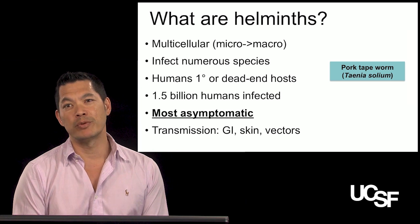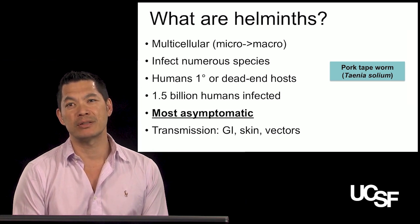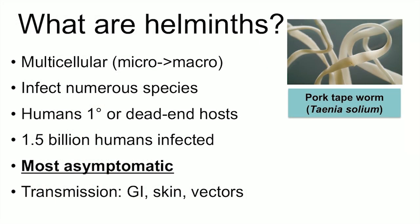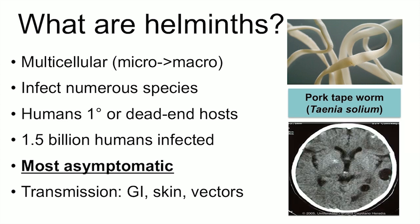Let's give you an example. There's a pork tapeworm associated mainly with infection in pigs, called Taenia solium. Depending on the form you ingest — in this case, eggs — the eggs hatch and the micro larvae move into the bloodstream to different parts of the body. In this case, the brain, where they cause cystic lesions. The inflammatory process to these lesions causes disease, and the patient may present with seizures.